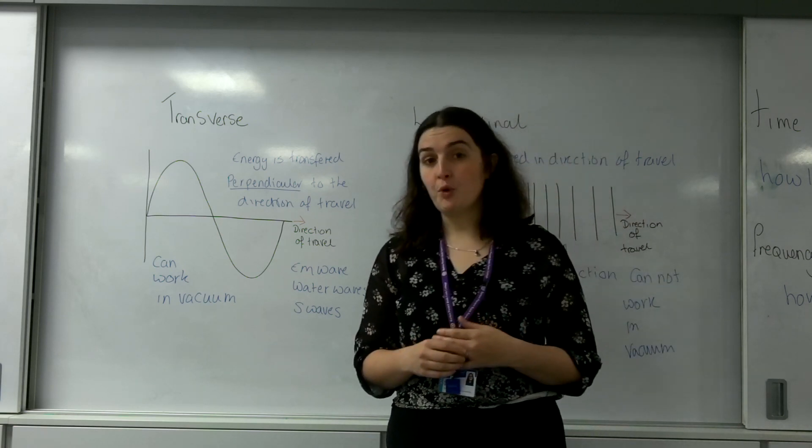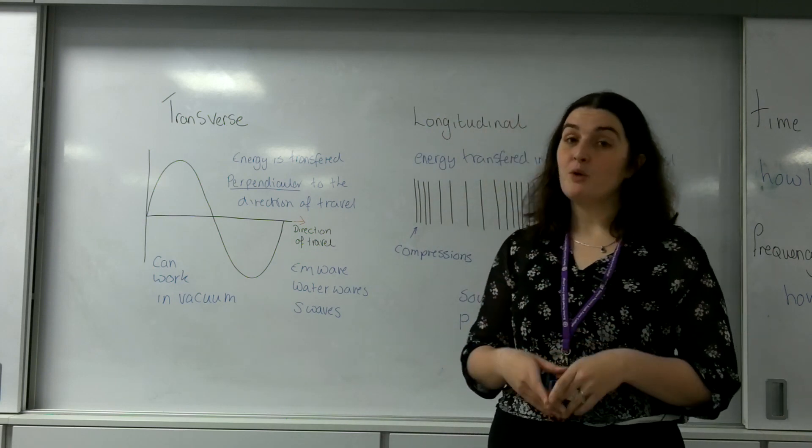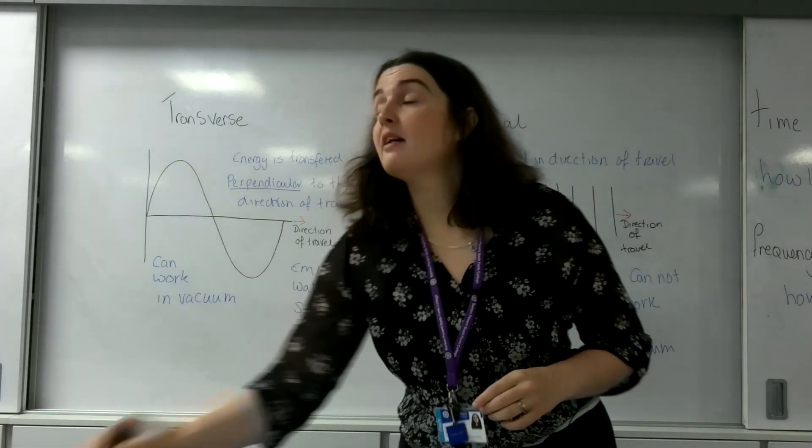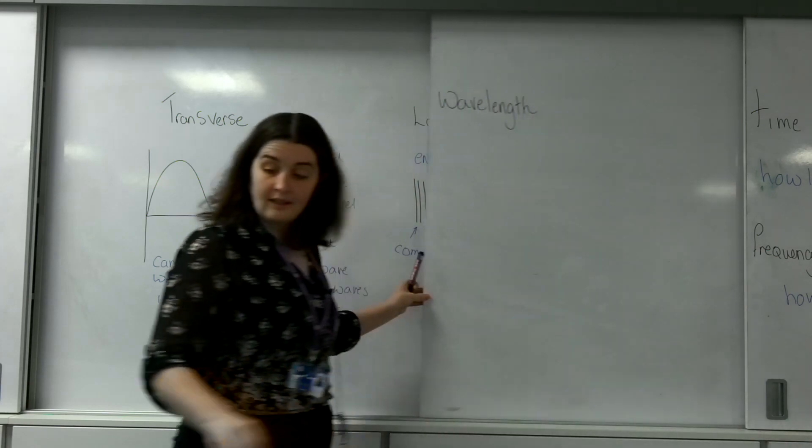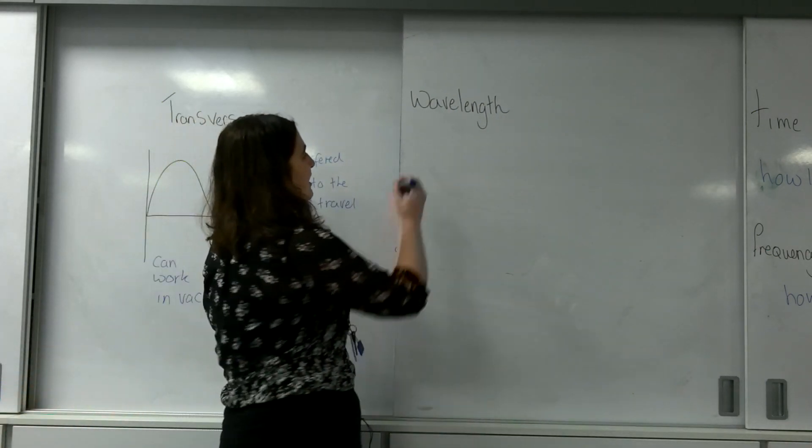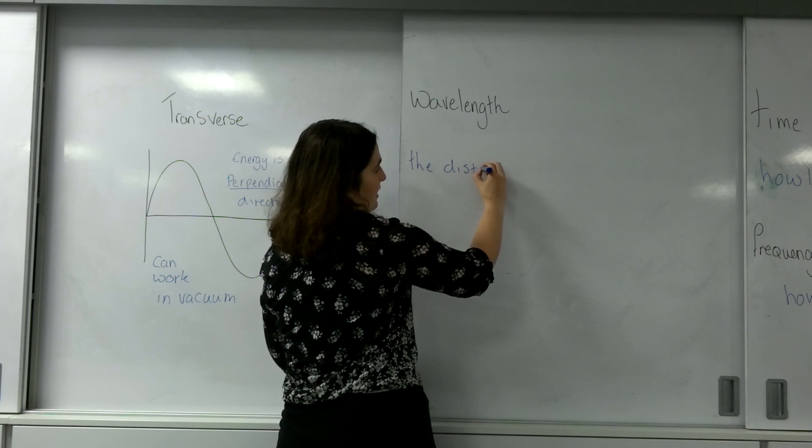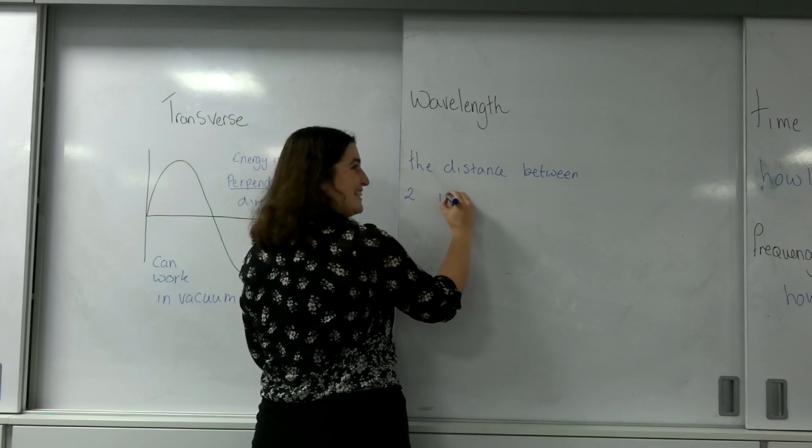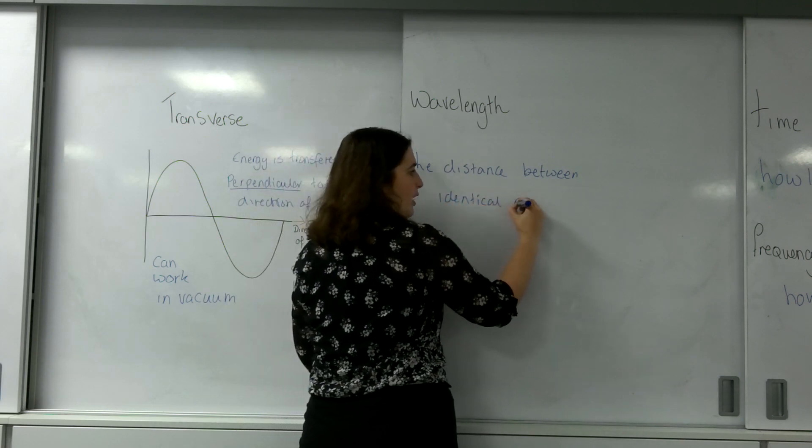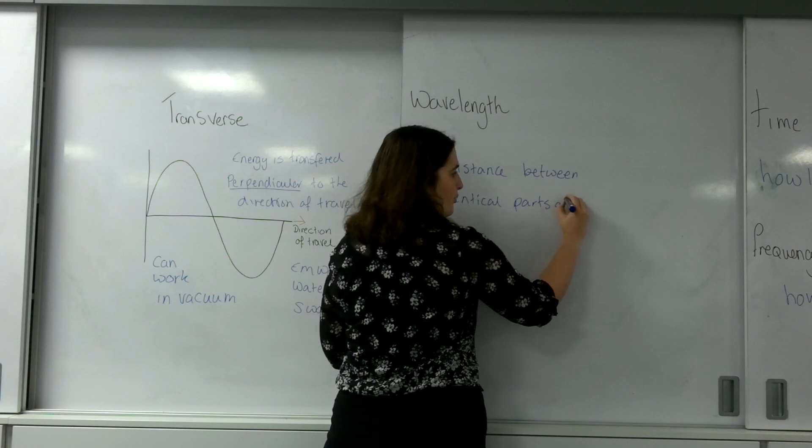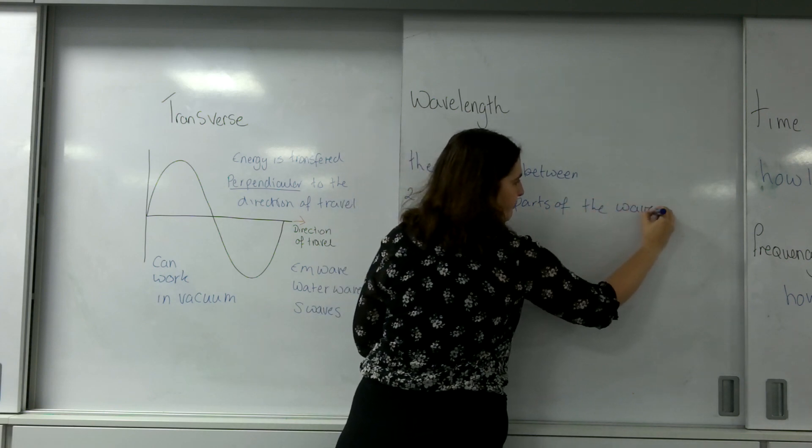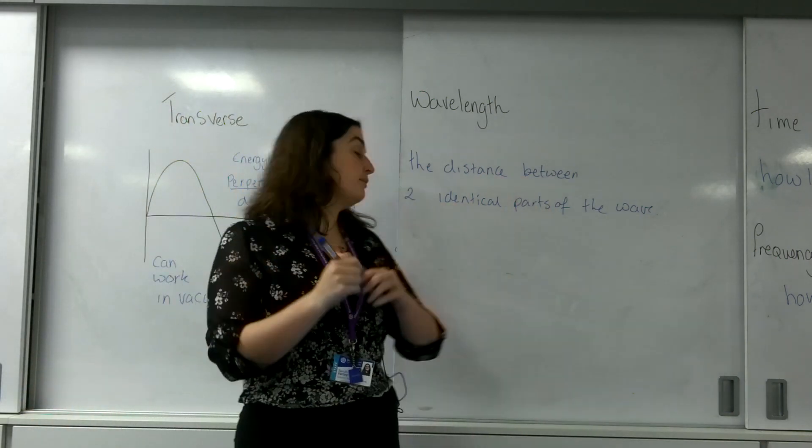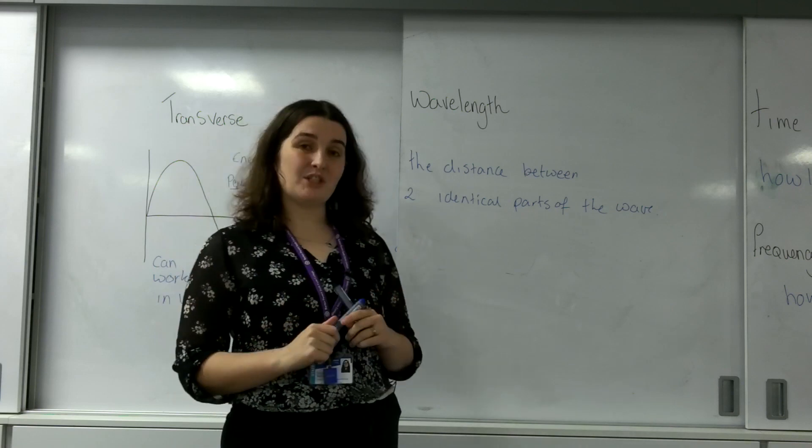I'm going to first of all talk about something very basic called the wavelength. The wavelength is defined as the distance between two identical parts of the wave. It's the actual distance, and by distance I mean distance travelled between two identical parts on a wave.